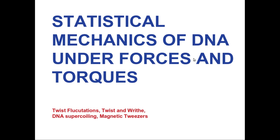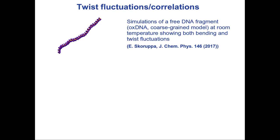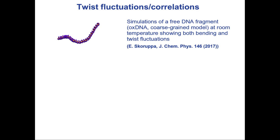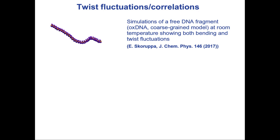In this lecture we discuss the statistical mechanics of DNA to which forces and torques are applied, and we discuss fluctuations and the concept of twist, writhe, and supercoiling. The first topic is the fluctuations in the twist. Here we see an animation — a simulation of a free DNA fragment, a linear piece of DNA, 100–150 base pairs. This is a simulation of a coarse-grained model called OxDNA at room temperature. Because the molecule is immersed in a solvent, treated explicitly with Langevin dynamics simulations, it fluctuates: it's spontaneously bent, showing bending fluctuation, but there are also twist fluctuations.